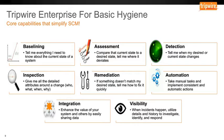Number seven, integration: you have to be able to enhance the value of your system and others by easily sharing data. This is not a war we will win on our own. With Tripwire Enterprise, we can enhance the value of your other systems, whether in IT operations and change management or in your other security programs, by sharing the data that we detect and that we know. And then finally, number eight, visibility: when incidents happen, how do we respond? We need to be able to utilize the details, the history, and investigate and identify what we need to do — whether that's removing systems from the network, cleaning systems, or just strengthening configuration.